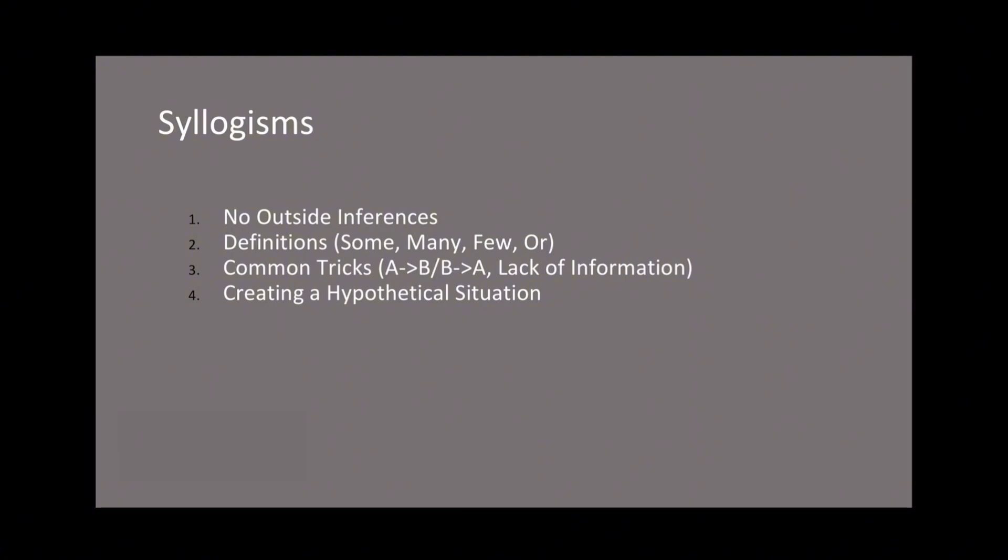"Not all" means 1 to 99. This is important because one of the most common interchanges that occurs is between "not all" and "some," which you can't always do. If I tell you not all my bananas are black, that might mean I only have one black banana. So if the premise says "not all" and the statement says "some of my bananas are black," you unfortunately can't conclude that because "some" is 2 to 99.